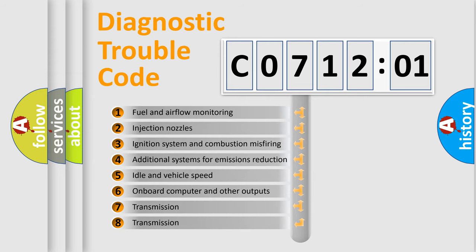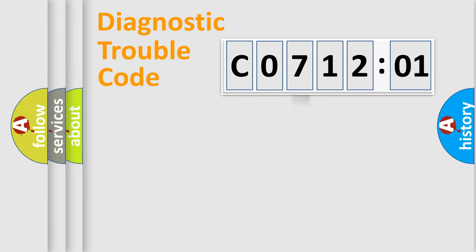The third character specifies a subset of errors. The distribution shown is valid only for the standardized DTC code.